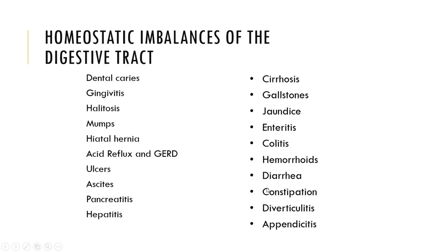Diarrhea is a watery stool, often caused by rapid movement of food through the digestive tract. Constipation is a difficult-to-pass stool, typically due to slow movement through the digestive tract, often a result of not taking in enough fiber. Diarrhea is rapid movement; constipation is slow movement through the digestive tract.